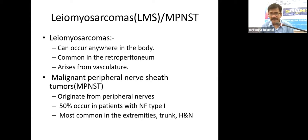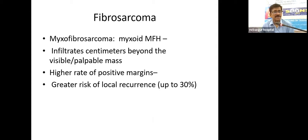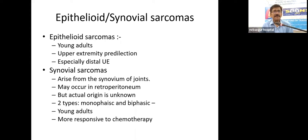Leiomyosarcomas arise from the vasculature of the retroperitoneum and can occur in other parts of the body. Malignant peripheral nerve sheath tumors are often associated with genetic syndromes like neurofibromatosis type 1, arising from the nerve sheath of peripheral nerves — 50 percent occur in NF1 patients. Fibrosarcomas can be pure fibrosarcoma or myxofibrosarcoma; these tumors infiltrate centimeters beyond the visible palpable mass, with higher rate of positive margins and greater risk of local recurrence.